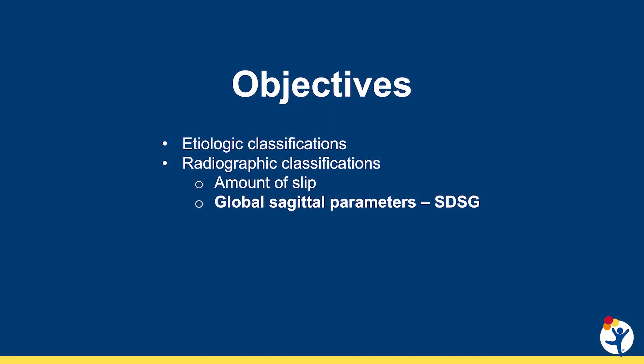Our objectives in this talk are to discuss the two primary types of classifications for this condition. These are etiologic classifications and radiographic classifications. The radiographic ones are related to the amount of slip in our more simple classifications, and a more complex classification that looks at global sagittal parameters as described by the Spinal Deformity Study Group.